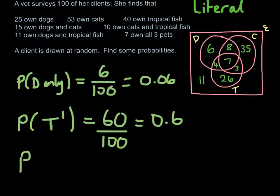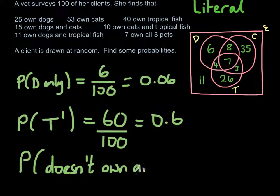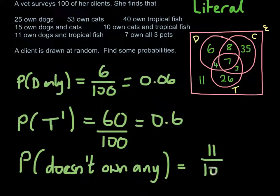So the next one. This time, we're going to work out the probability that the client picked at random doesn't own any dog, cat, or tropical fish. So that's just going to be that number 11 that was on the outside of the circle. It's just simple. It's just 11 over 100, which would be 0.11. And you can leave these as fractions or as decimals, remember.